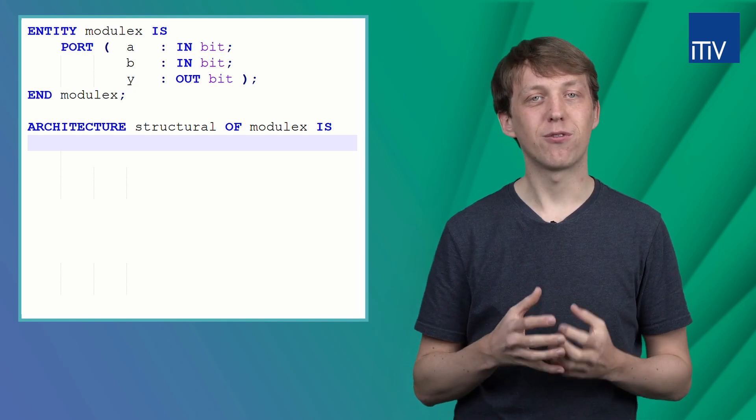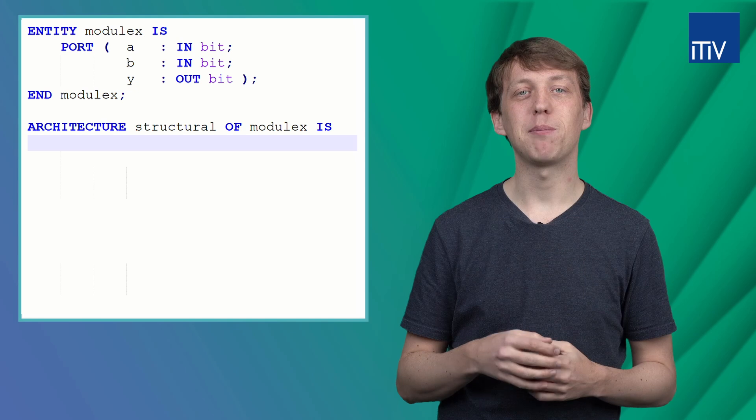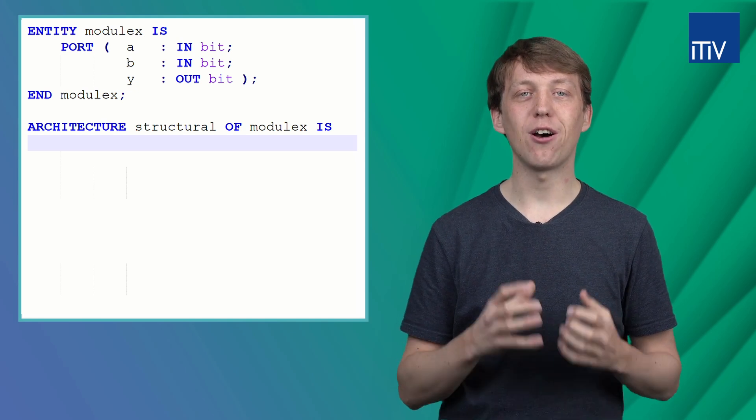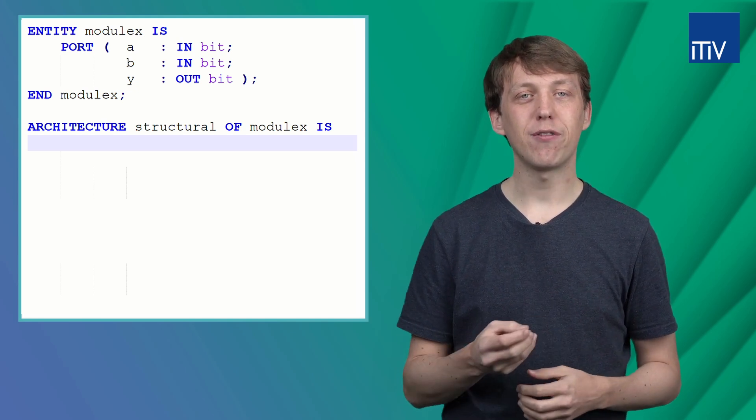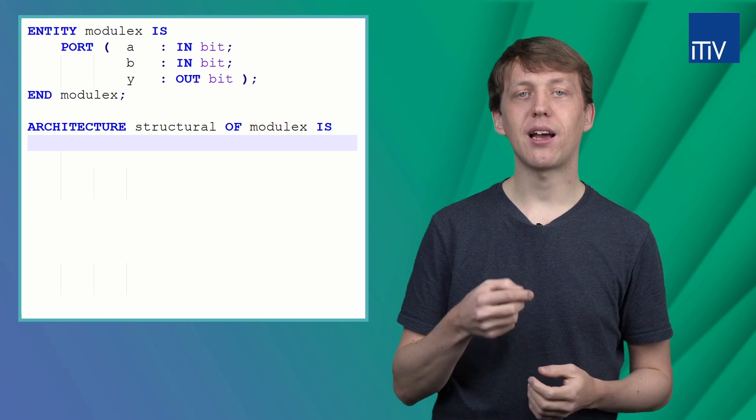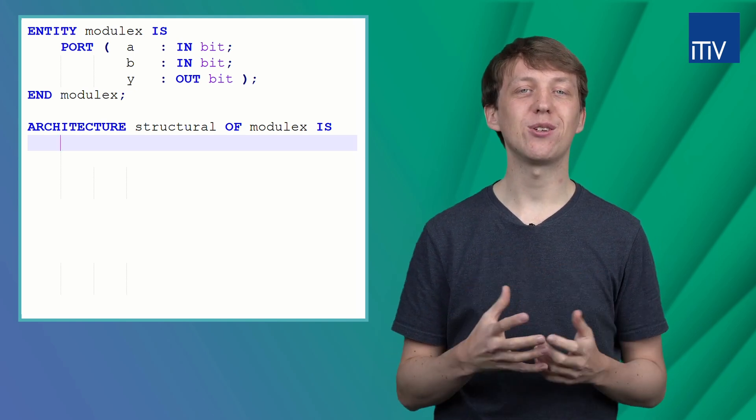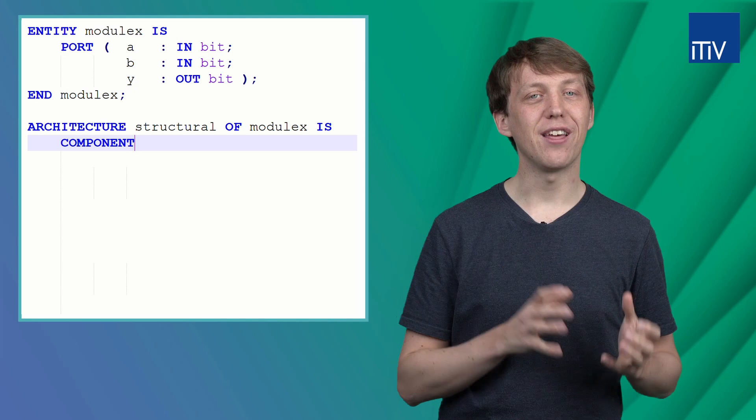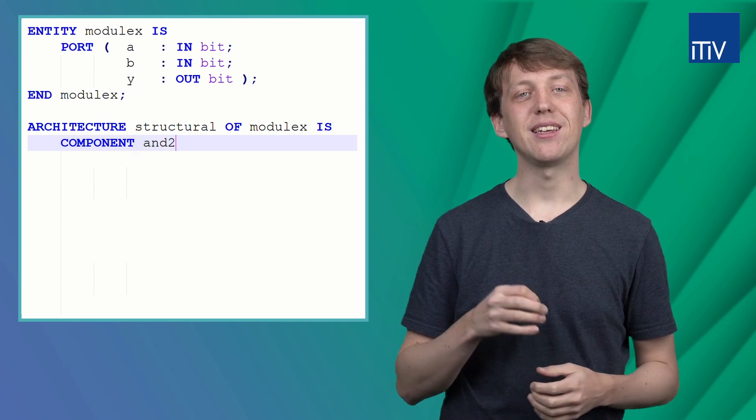As stated before, this has to be done before the instantiation of the AND gate. Therefore, we will declare it right after the first line using the component keyword, then the name of the design and the IS keyword.